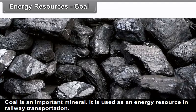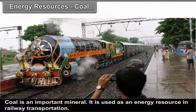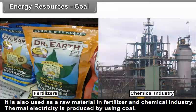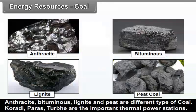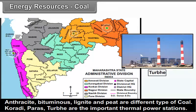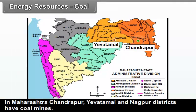Energy Resources — Coal: Coal is an important mineral. It is used as an energy resource in railway transportation. It is also used as a raw material in fertilizer and chemical industries. Thermal electricity is produced by using coal. Anthracite, Bituminous, Lignite and Peat are different types of coal. Koradi, Paras and Trombay are the important thermal power stations. In Maharashtra, Chandrapur, Yavatmal and Nagpur districts have coal mines.